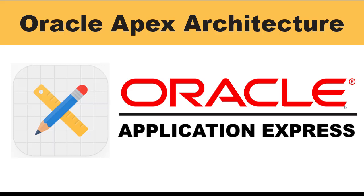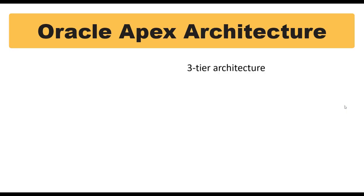Welcome back to the course. In the last section we discussed what and why to use Oracle Apex. Now let's come back to the architecture part. Oracle Apex uses a three-tier architecture which comprises of the browser, web server, and database.